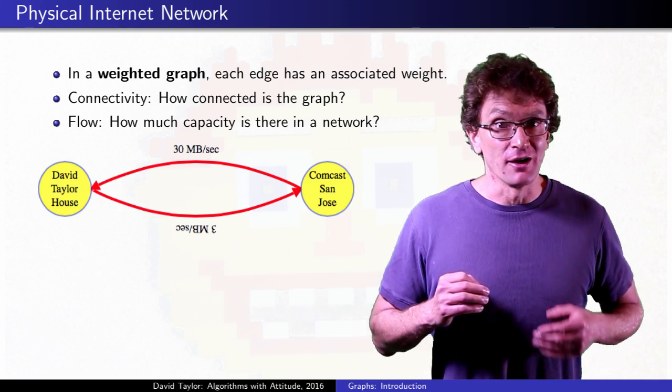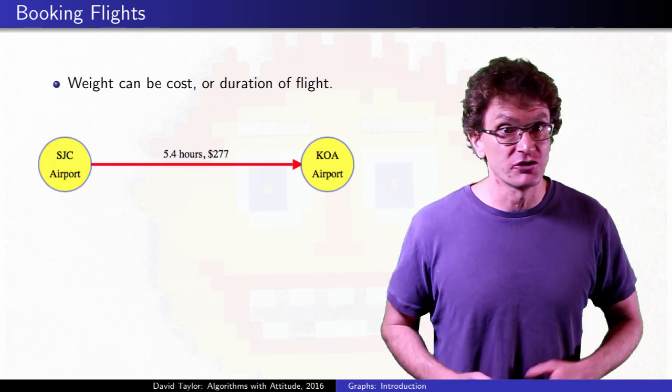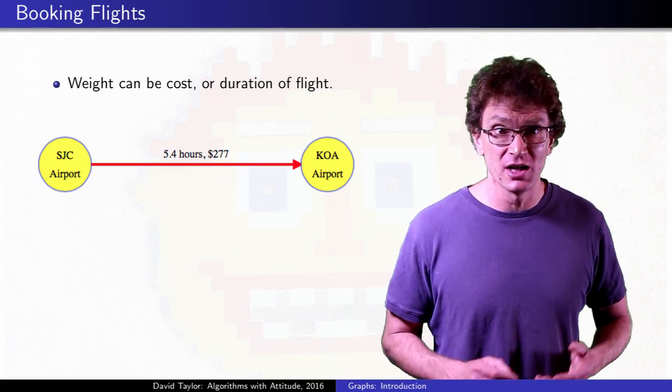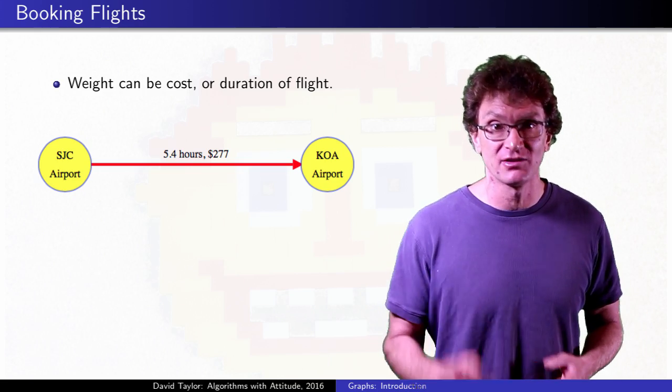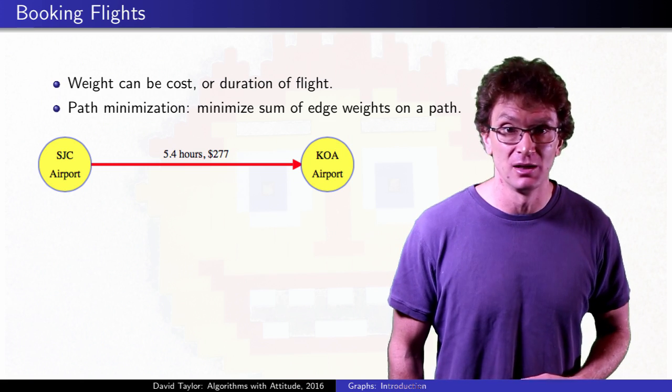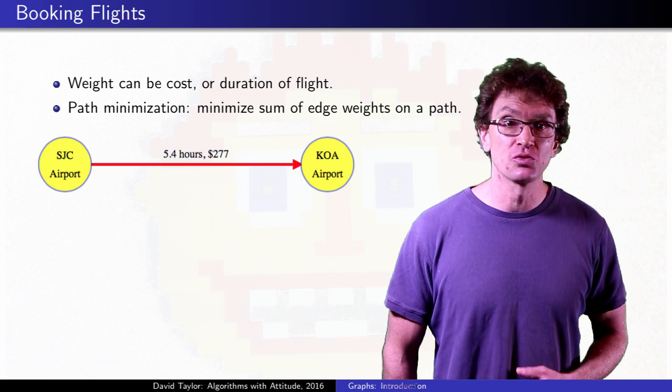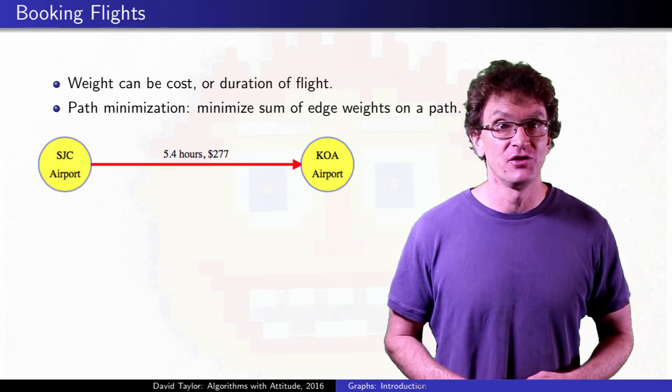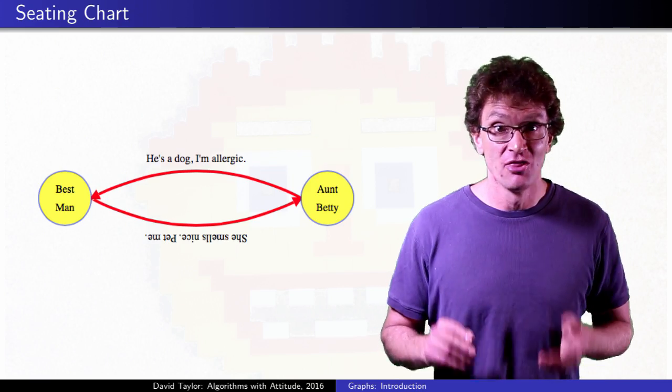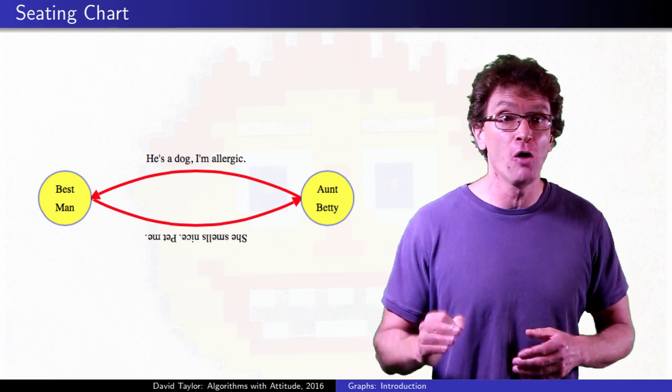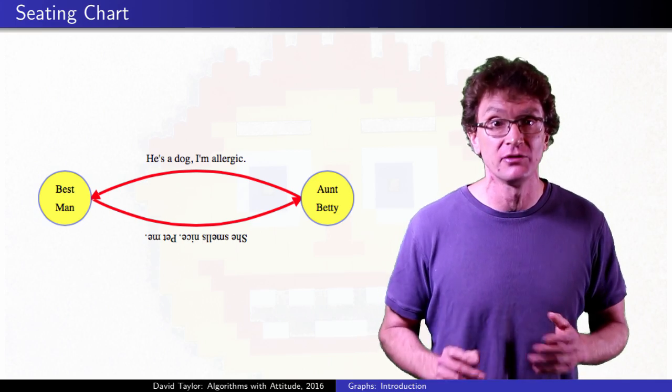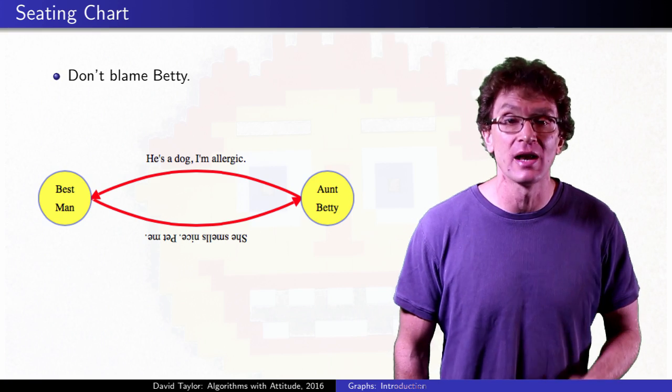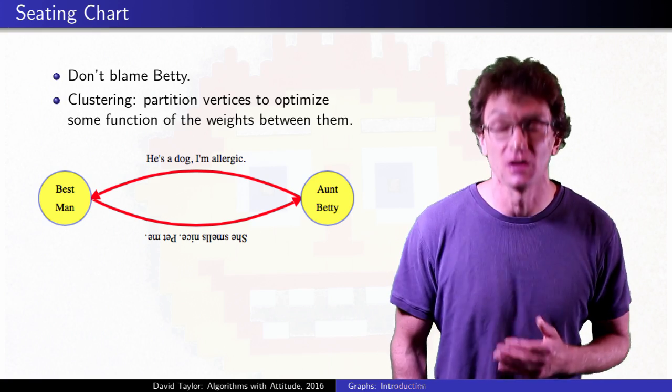If you're modeling a flight, it might represent the cost of the flight, or its duration. Want to minimize the cost, or the duration, or some combination of both to get somewhere? That's a path minimization problem. The edge weights can really stand for whatever thing you're trying to optimize. If it's a seating chart for your wedding, that weight might represent how much your Aunt Betty despises your best man, and you're trying to pick tables to minimize how unhappy your guests are. That's a clustering problem.